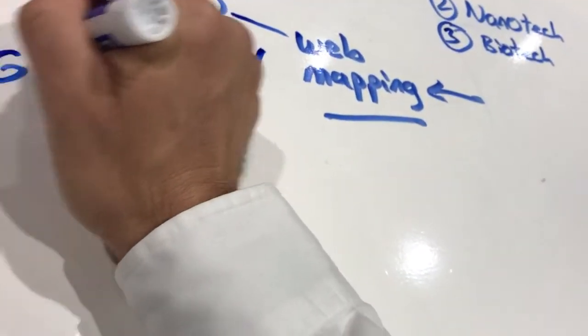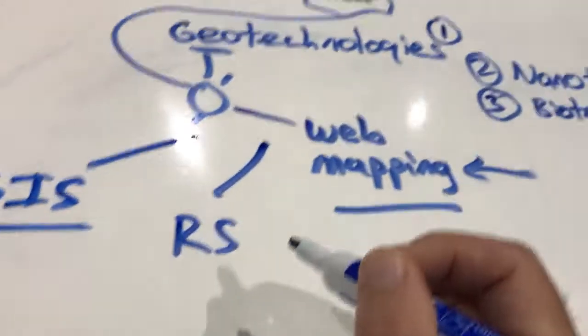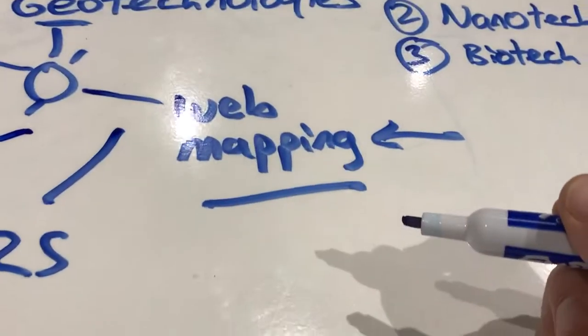And also includes geographic information systems, or GIS. So these three things are part of geotechnologies.